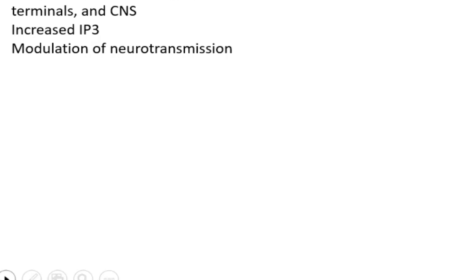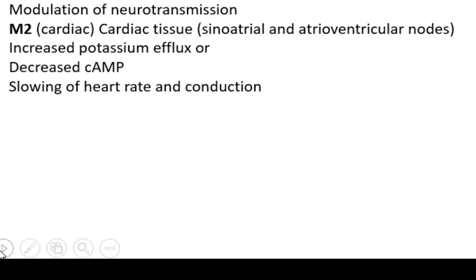The M2 receptors are found in the heart and coupled with GI proteins. Their activation decreases cyclic adenosine monophosphate (cAMP) levels by inhibiting adenylate cyclase, leading to decreased cardiac conduction and heart rate.